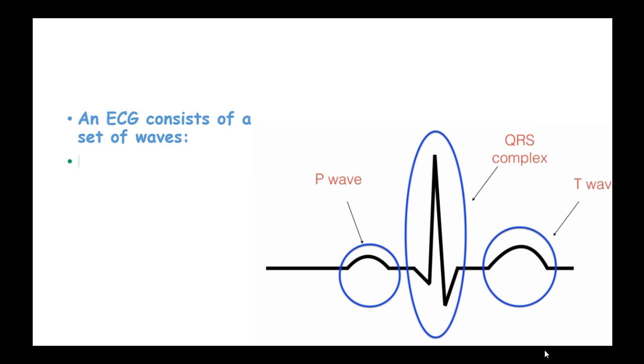An ECG consists of a set of waves: a P-wave, QRS complex, and a T-wave.